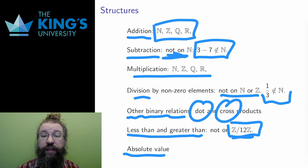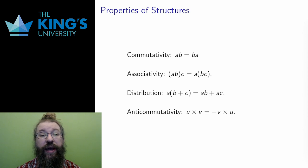In the first week, I introduced commutativity, associativity, and distribution. In this week, I talked about how the cross product is anti-commutative.